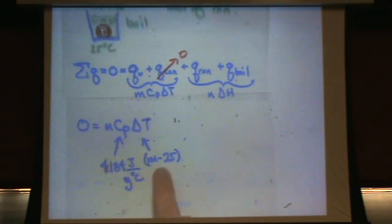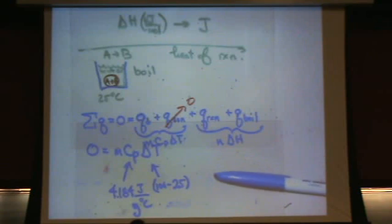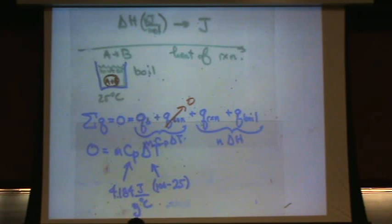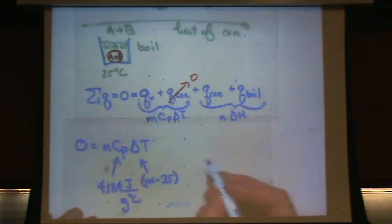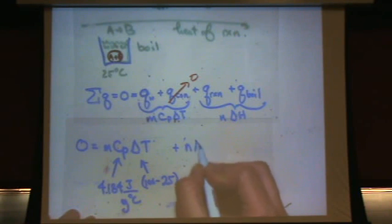All right, so there's that. What else do we got? Oh, the mass. I didn't give you the mass of the water, so it would depend. Either you'd be given the mass of the water or the volume of the water. What would you do if you have the volume of the water? Apply the density. What's the density of water? One gram per mil.